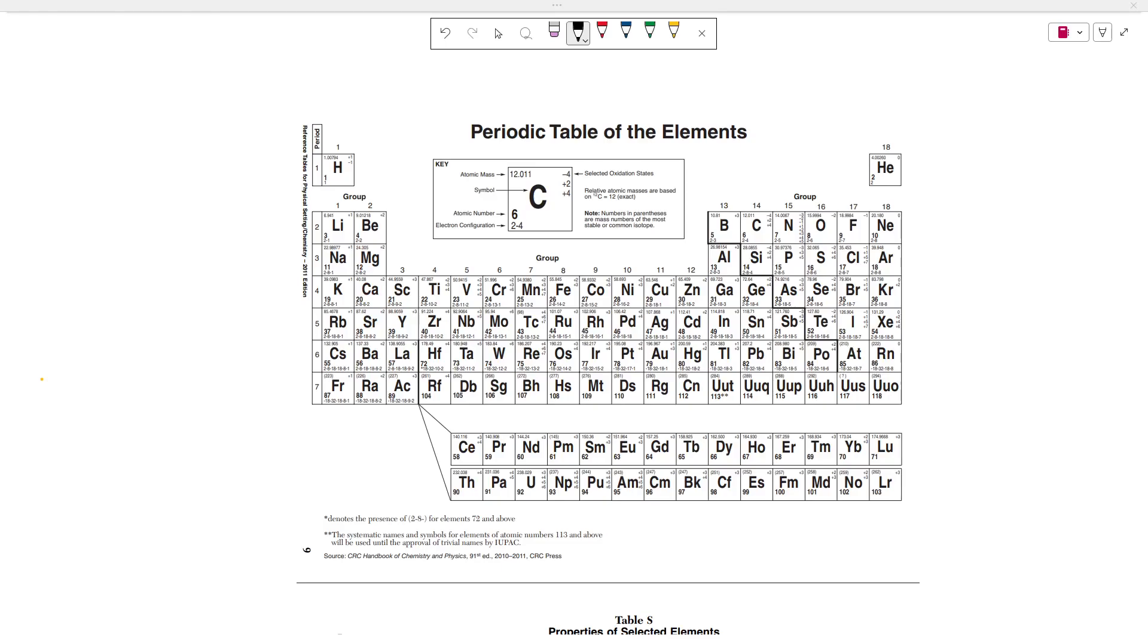This is everything you need to know about atomic radius for the chemistry regions in under five minutes. So the atomic radius is what we call a periodic trend. In other words, because of the way that the periodic table of elements is arranged, there are some certain trends that appear.